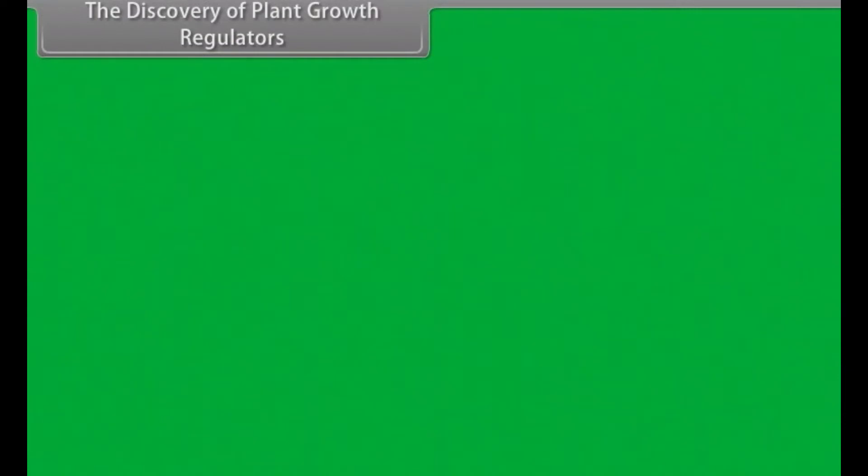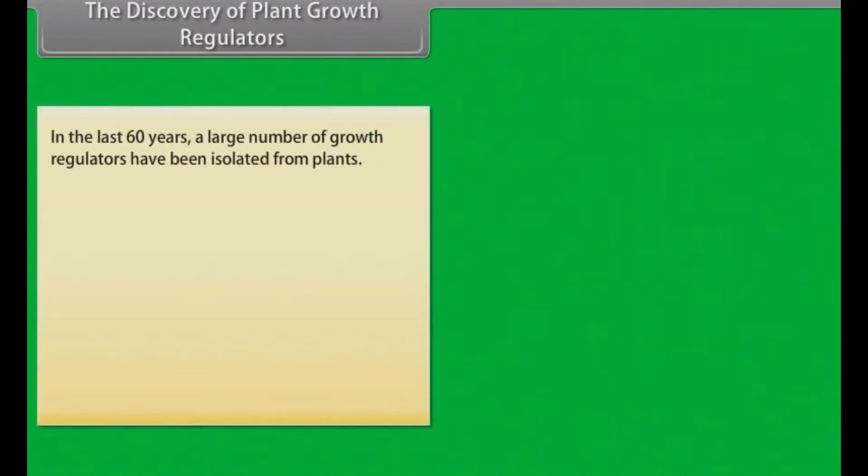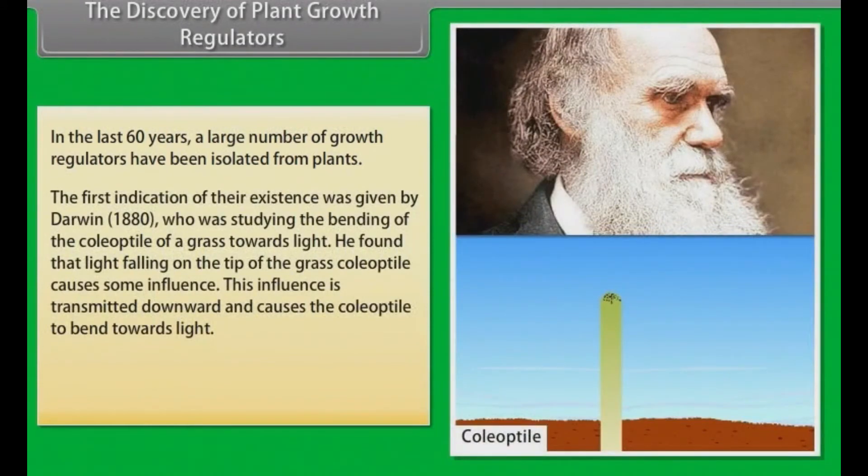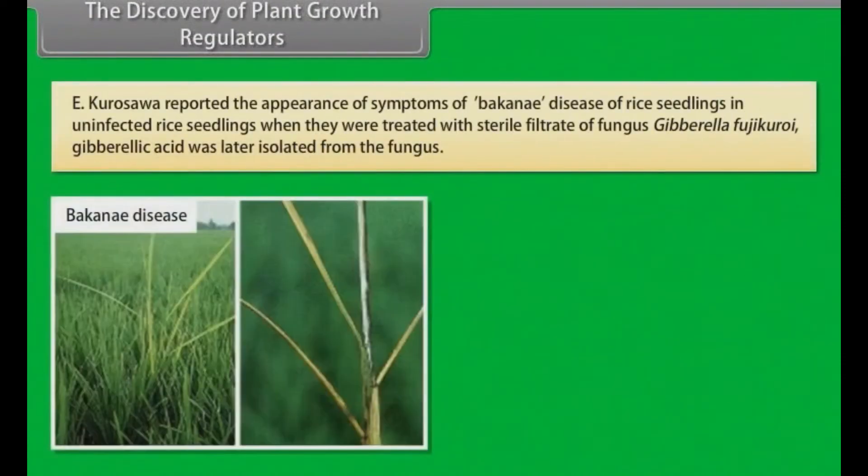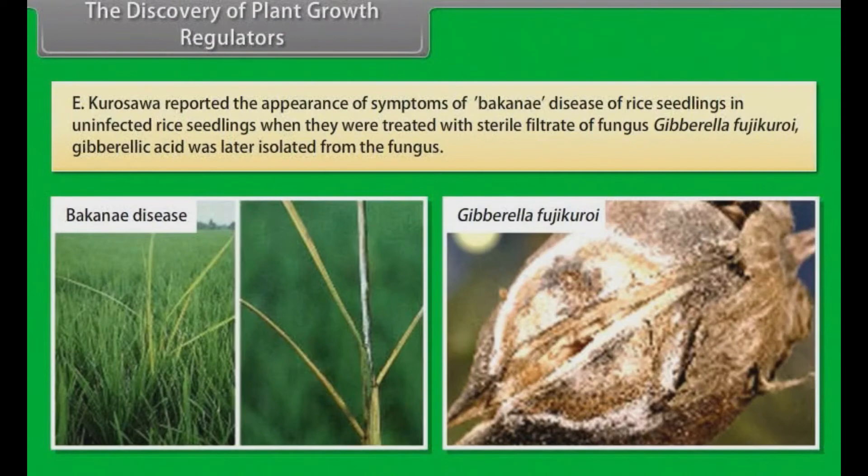The Discovery of Plant Growth Regulators. In the last 60 years, a large number of growth regulators have been isolated from plants. The first indication of their existence was given by Darwin, 1880, who was studying the bending of the coleoptile of a grass towards light. He found that the light falling on the tip of the grass coleoptile causes some influence. This influence is transmitted downward and causes the coleoptile to bend towards light. F.W. Went isolated auxin from the tip of the coleoptiles. E. Kurosawa reported the appearance of symptoms of Bakanae disease of rice seedlings in uninfected rice seedlings when they were treated with sterile filtrate of fungus Gibberella fujikuroi. Gibberellic acid was later isolated from the fungus.